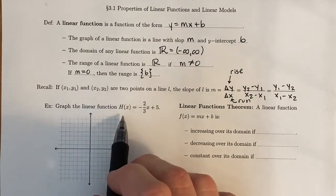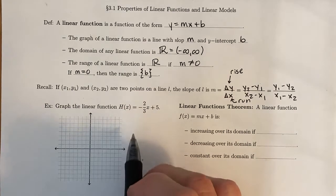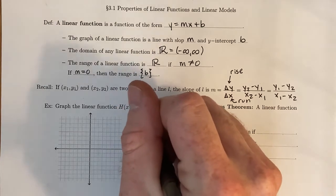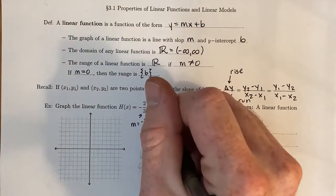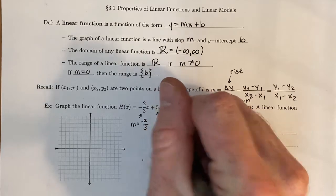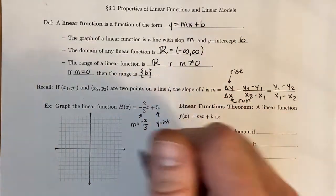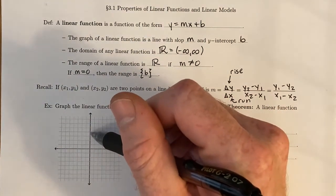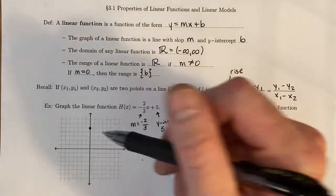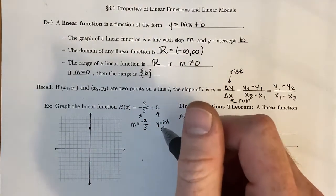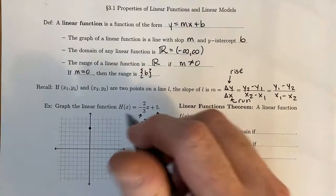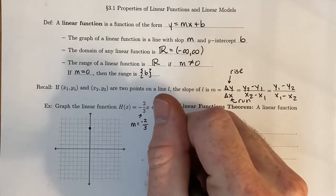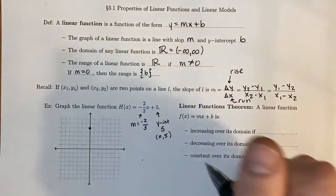Now, suppose that you're given this function h of x, which is negative 2 thirds x plus 5. Right here, we have a slope of negative 2 thirds and a y-intercept of 5. Which means we go up 5, 1, 2, 3, 4, 5, and make that point. Remember that any point on the y-axis has an x-coordinate of 0. So this is really the point 0, 5 for the y-intercept.